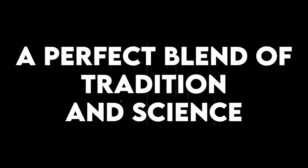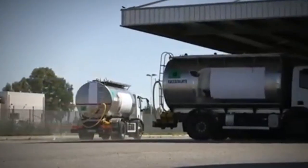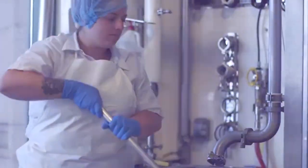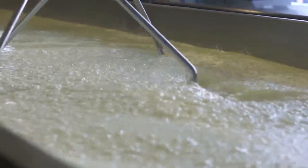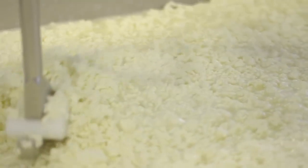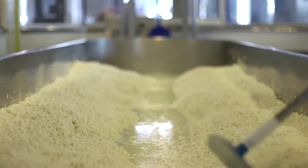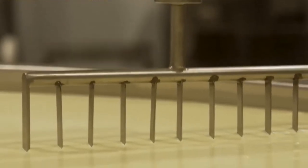A perfect blend of tradition and science. Cheese factories are fascinating places where traditional ways meet modern machines. The basic steps like curdling, cutting, pressing, and aging have been used for thousands of years. But today, factories use clean, safe, and efficient methods to make large amounts of cheese while keeping it high quality. Each kind of cheese has its own special recipe, timing, and tools.